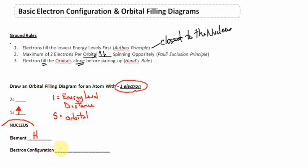The electron configuration is where we express where our electrons are located using numbers and letters. The electron configuration is simply 1s1. The 1 is the energy level — on the first energy level, in the S orbital, I have 1 electron. So my electron configuration of 1s1 simply states I have 1 electron in the S orbital of the first energy level. This is the electron configuration of hydrogen, and this is the orbital filling diagram for hydrogen.